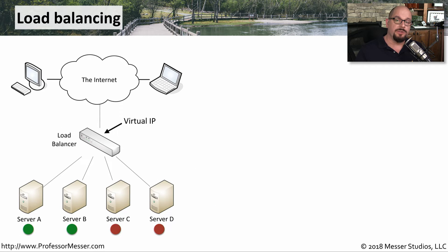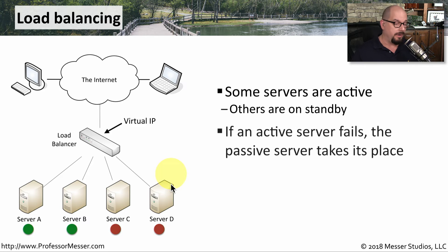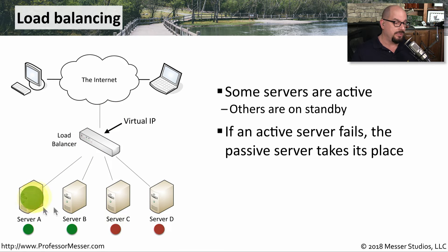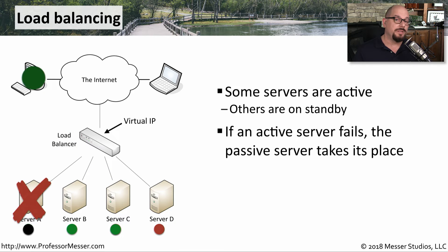One way to provide high availability with servers is to put them behind a load balancer. With many load balancers, you can configure certain servers to always be available — those are the ones designated with green dots — but there may be some servers that are online and waiting for a problem to occur. If you do have a server failure, one of these passive servers will take its place. The load balancer is always performing a health check on all of these servers, and if a server suddenly becomes unavailable, the load balancer will recognize that scenario and begin using a separate standby server. That way, there will always be a server available for any request.